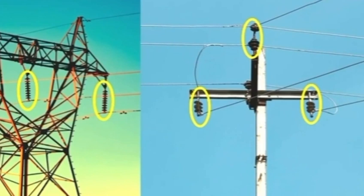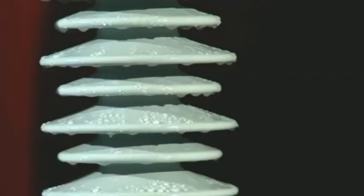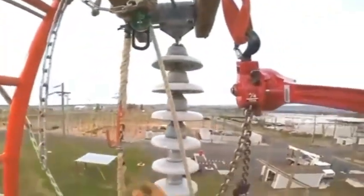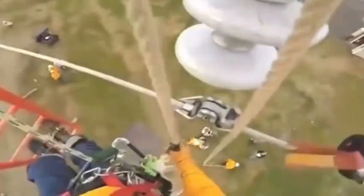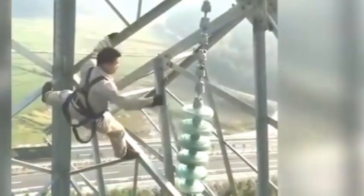If the insulator is damaged or affected by factors such as pollution, the effect of insulation will be greatly reduced. At this time, it will cause insulation breakdown and short circuit. Therefore, in order to ensure the normal operation of the entire grid, electrical workers regularly check and repair insulators.